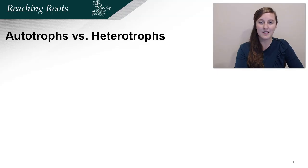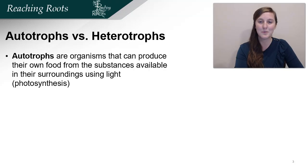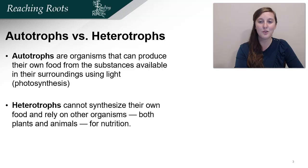This means that plants are autotrophs and we are heterotrophs. Autotrophs are organisms that can produce their own food from substances available in their surroundings, like using light in photosynthesis. Heterotrophs cannot synthesize their own food and rely on other organisms, both plants and animals, for nutrition.